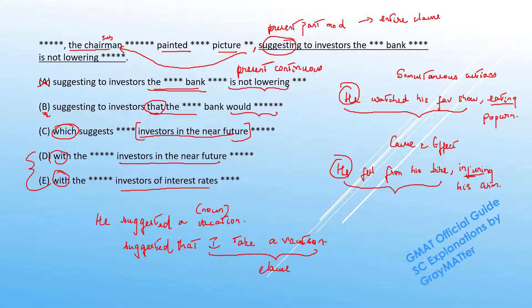Look at what C says: "investors in the near future." Are we talking about investors in the near future or the bank doing something in the near future? So C distorts the meaning. C goes off.